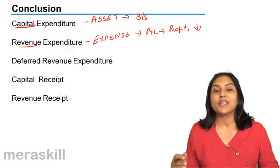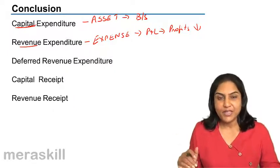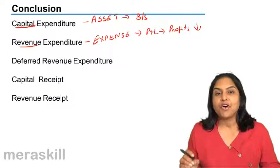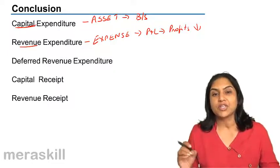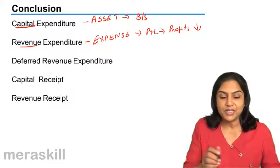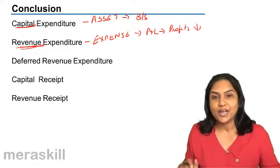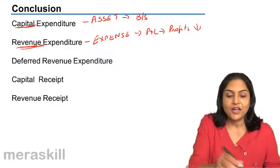Then it depends on the nature of the expense. If it is a regular recurring expense, which are incurred for the regular business operations, for running the day-to-day business activities of the business, they are called revenue in nature. But expenses which are incurred once in a while, they are called capital.